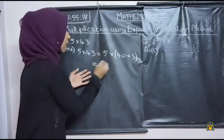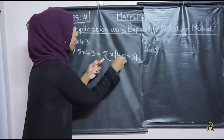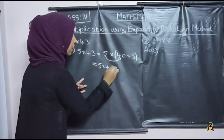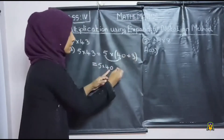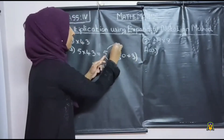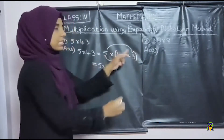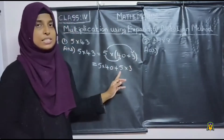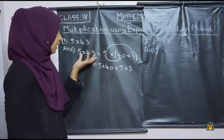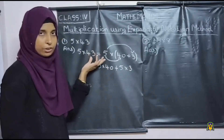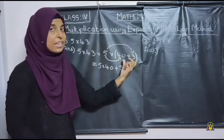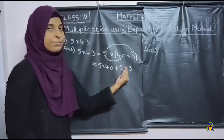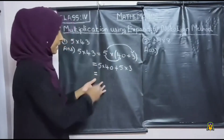So first multiply 5 into 40, then plus 5 into 3. This is how we are multiplying — we multiply each term by 5: 5 into 40 plus 5 into 3.